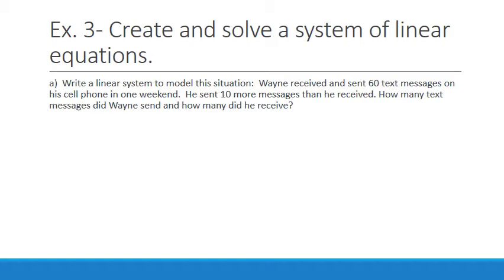So if we read here, if the linear system is not given, then you must create it. Once you've created the linear system, you can then solve it. Remember that sometimes it doesn't make sense to connect the points of a real-life linear relation. There is no such thing as 2.4 texts or 2.4 people, for example. Write a linear system to model this situation. Wayne received and sent 60 text messages on his cell phone in one weekend. He sent 10 more messages than he received. How many text messages did Wayne send and how many did he receive?